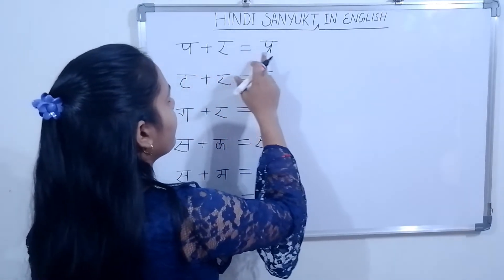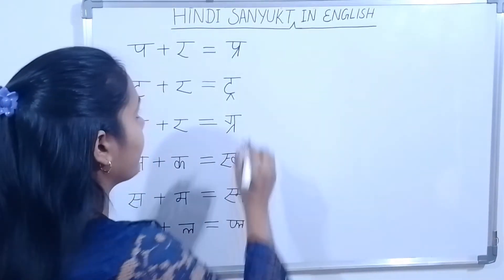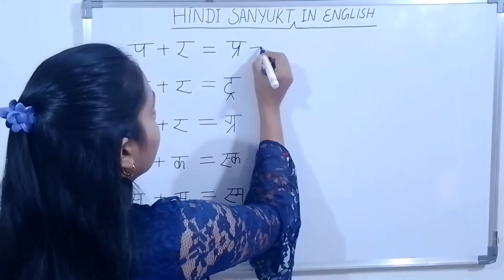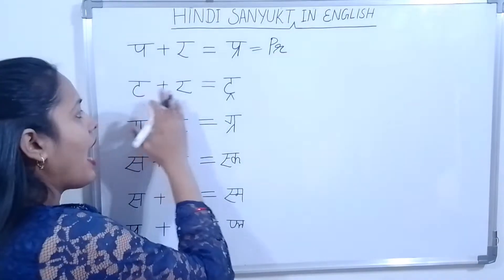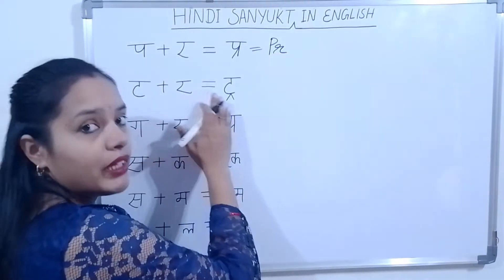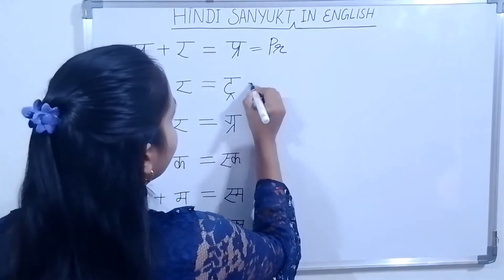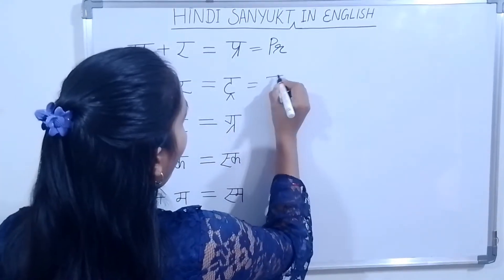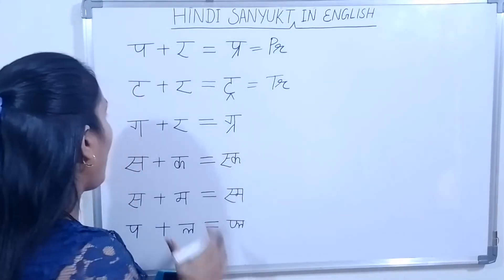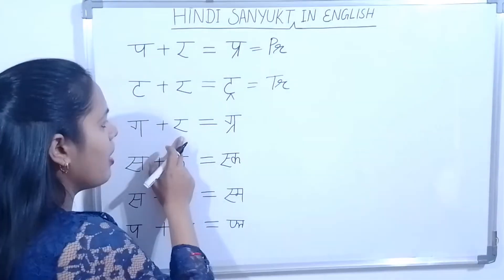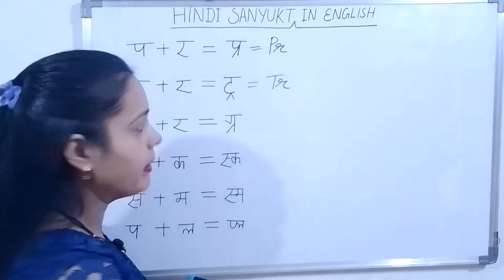Pro and rub — what do you think? 'Pro' from English: pro ko hum English mein likhenge T.R. And then 'rub' — milke kya huwa hai? G.R. — gr ko hum English mein likhenge Z.R.